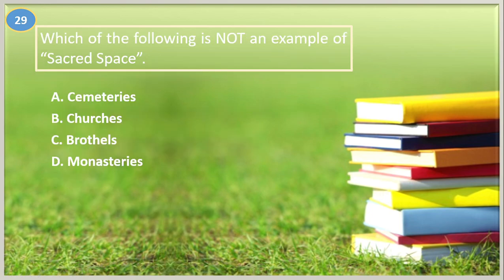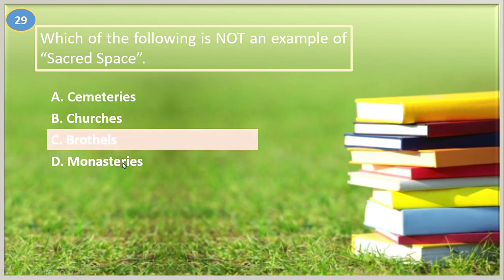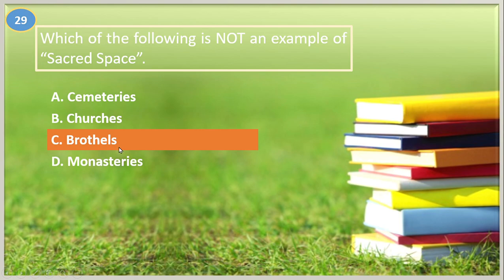Number twenty-nine. Which of the following is NOT an example of sacred space? A. Cemeteries, B. Churches, C. Brothels, D. Monasteries. The answer is brothels. A brothel is a place of recreation in which prostitutes are available, so it is not considered a sacred space.